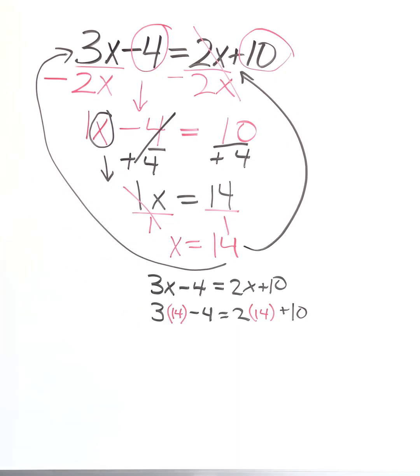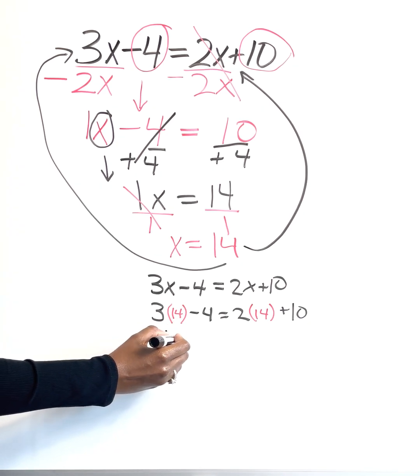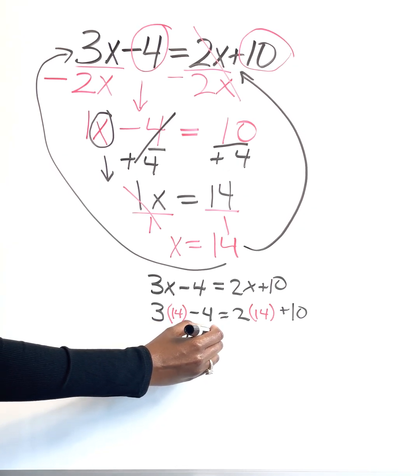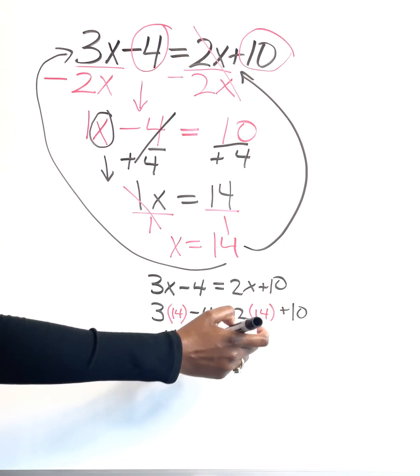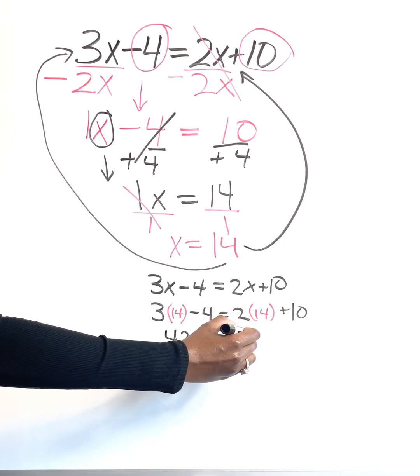So remember, this is 3 times 14, which is going to give us 42. And then we're going to do 2 times 14, which is 28.